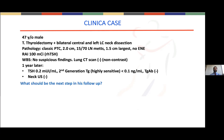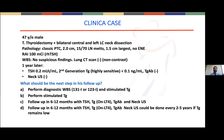I would like to ask you what should be the next step in his follow-up. Option A: perform a diagnostic whole body scan and a stimulated thyroglobulin. Option B: perform only a stimulated thyroglobulin. Option C: follow this patient at 6 to 12 months with TSH, thyroglobulin using levothyroxine (non-stimulated), thyroglobulin antibodies, and neck ultrasound. Option D: follow the patient at 6 to 12 months with the same biochemical assessment, but defer the neck ultrasound to every two to five years if thyroglobulin remains low.